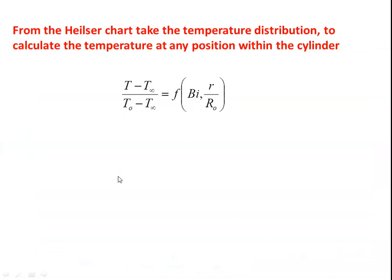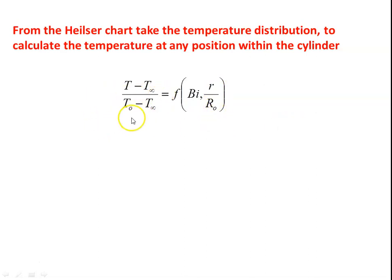To calculate the temperature at any given position, take the temperature distribution from the second Heisler chart. The temperature ratio (T − T∞)/(T₀ − T∞) is a function of Biot number and the non-dimensional position ratio r/R₀. Here T₀ is the center temperature from the previous calculation.